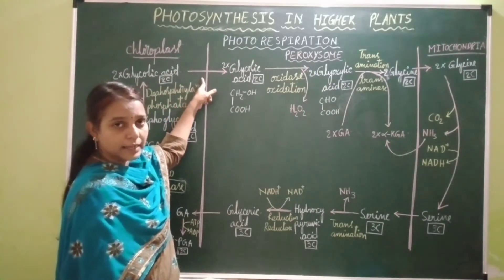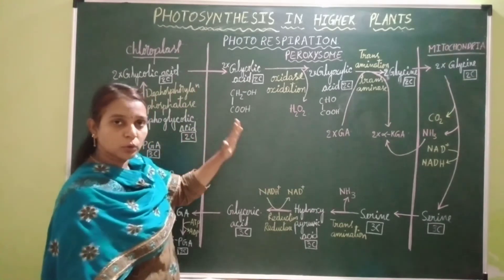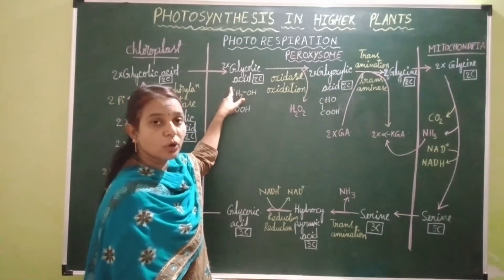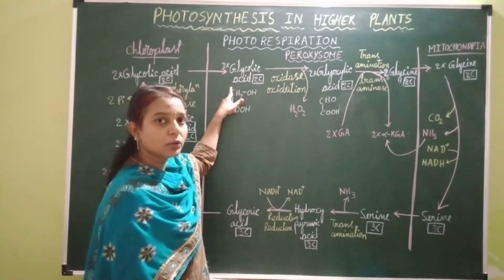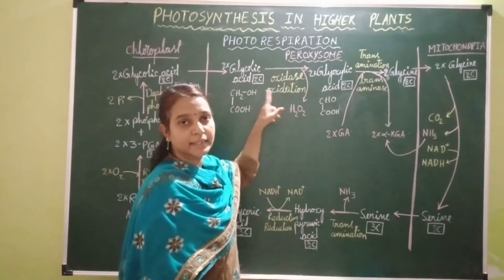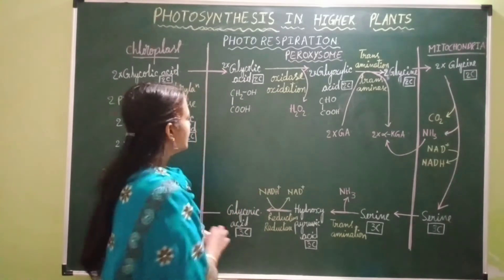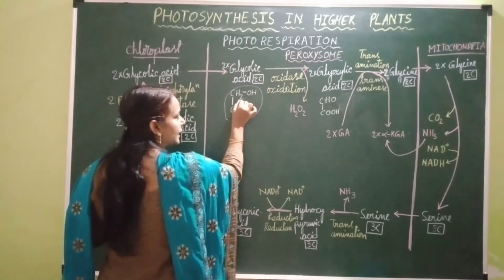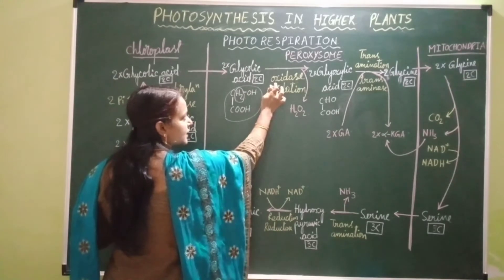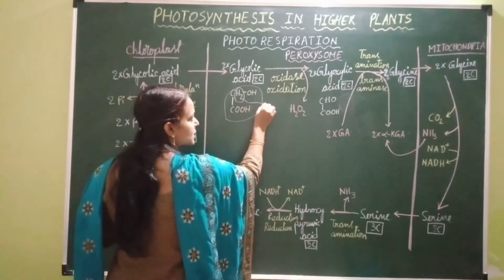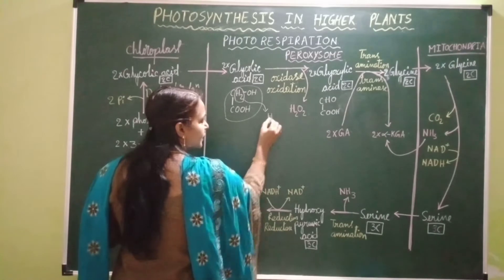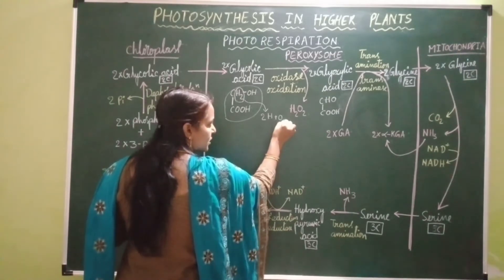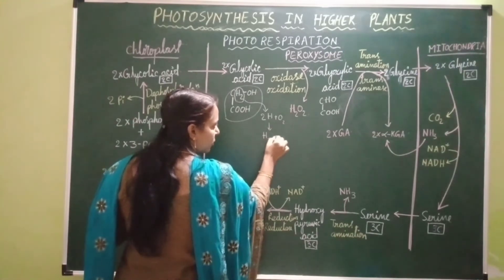These two molecules of glycolic acid leave the chloroplast and enter the peroxisome. Inside the peroxisome, they undergo oxidation by the enzyme oxidase. From glycolic acid, two hydrogens are released, which combine with oxygen to form hydrogen peroxide.